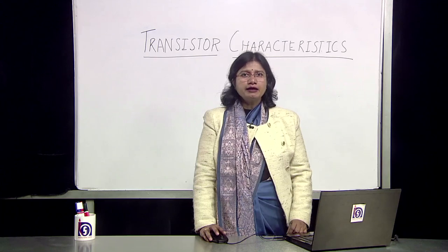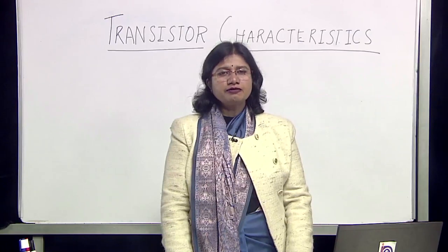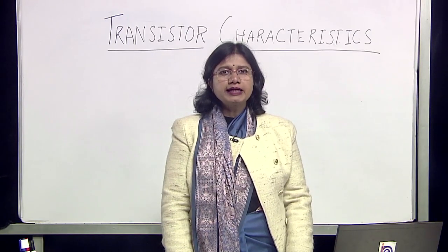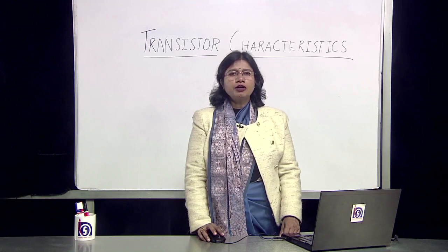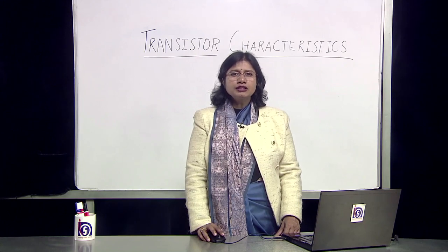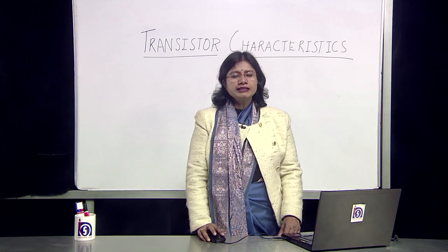The third kind of configuration with a transistor is the common collector configuration. In this configuration, the collector is kept common to both the input and the output circuit. This particular configuration is practically used for impedance matching. It is not a very common configuration for other practical uses, so it is rarely used, but it is suited for impedance matching in various devices.